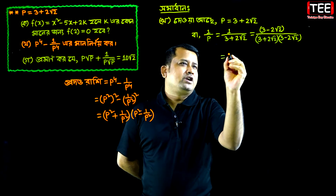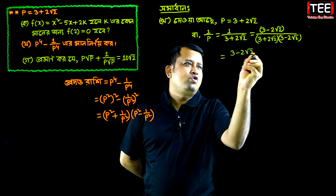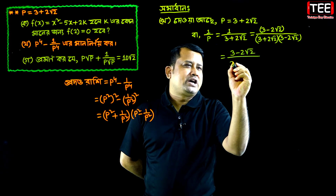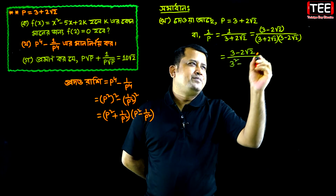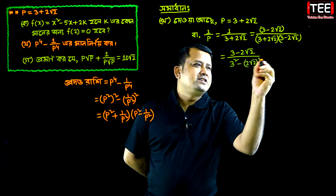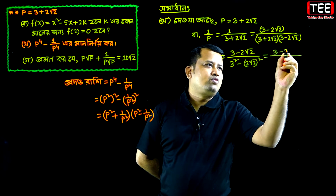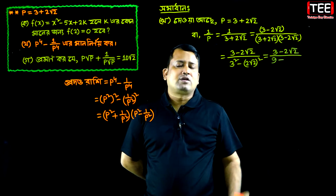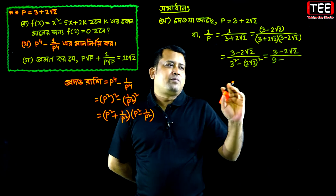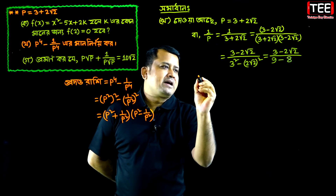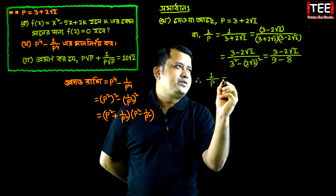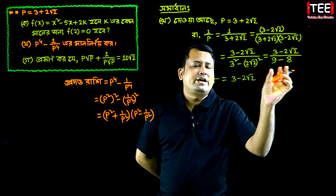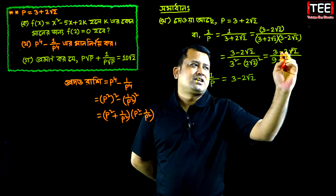Let's calculate: we see 3 minus 2 root 2. Using (a plus b)(a minus b) equals a squared minus b squared, where a equals 3 and b equals 2 root 2. So 3 squared minus (2 root 2) squared equals 9 minus 8 equals 1. Therefore 1 by p equals 3 minus 2 root 2.